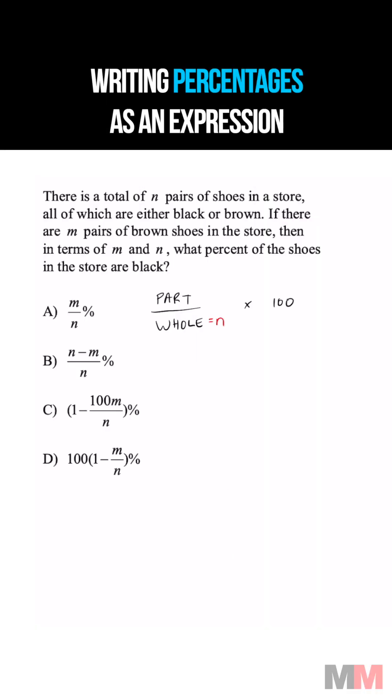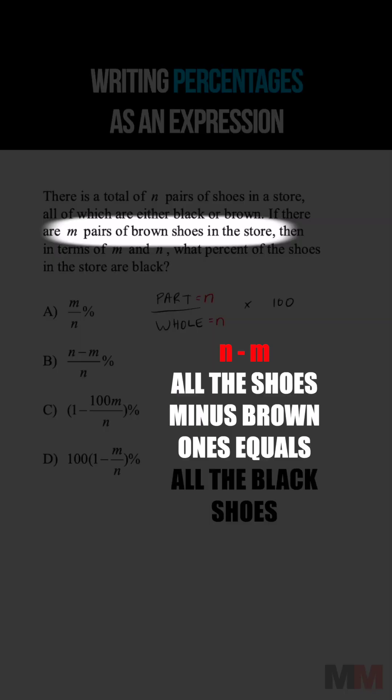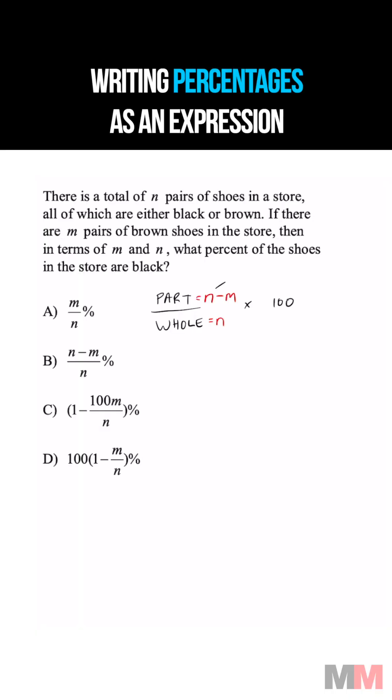For the part, we're looking for the black shoes, so we take all the shoes in the store and subtract the brown ones. That's n minus m, which is the expression for the black shoes.